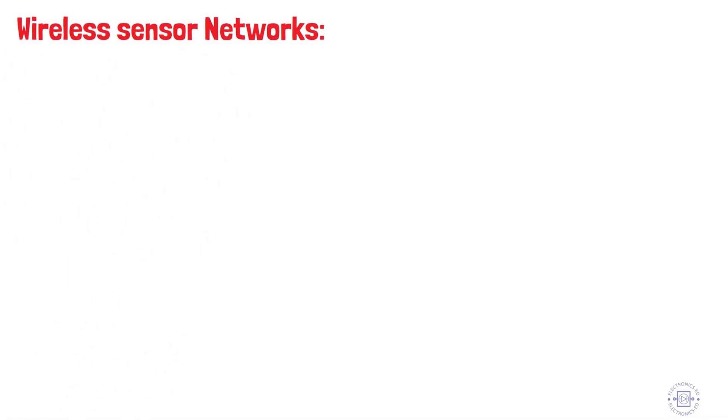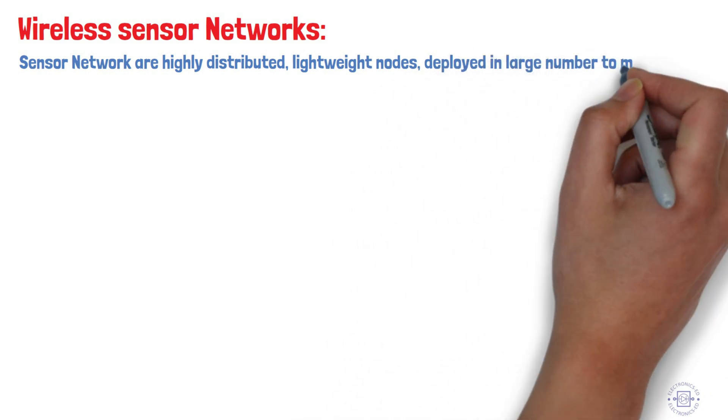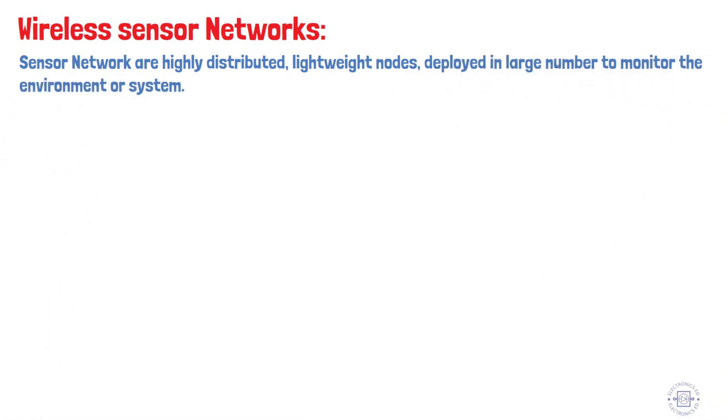Wireless sensor networks. Sensor networks are highly distributed, lightweight nodes deployed in large numbers to monitor the environment or system.